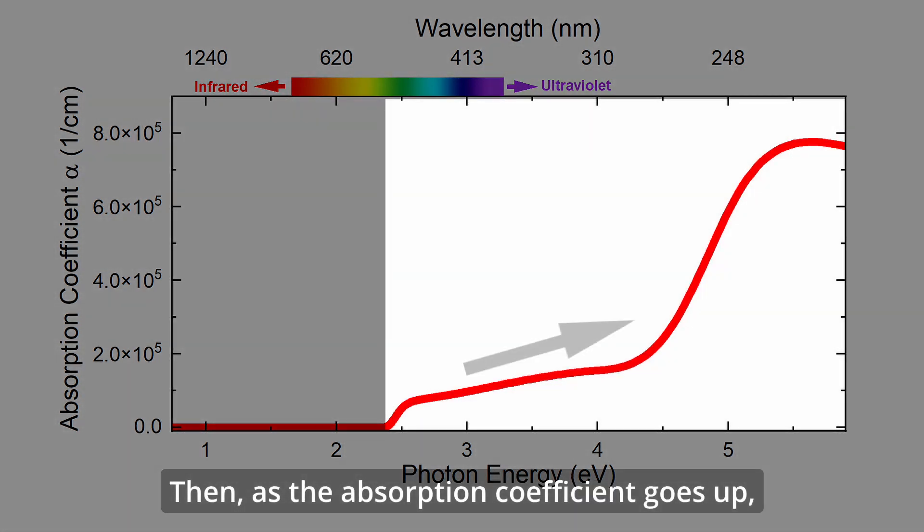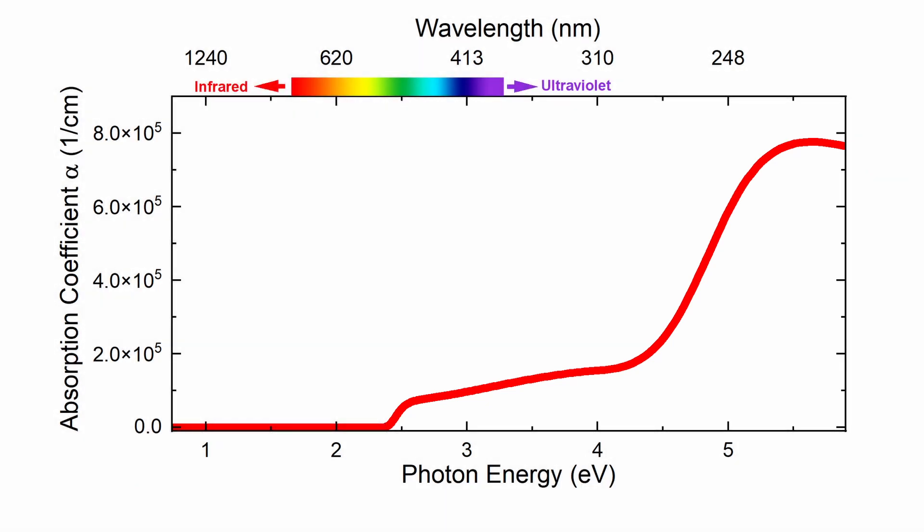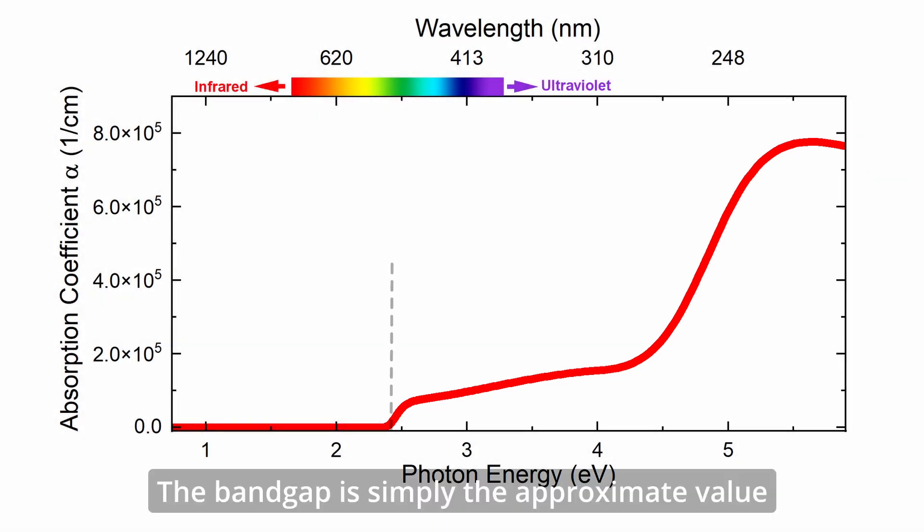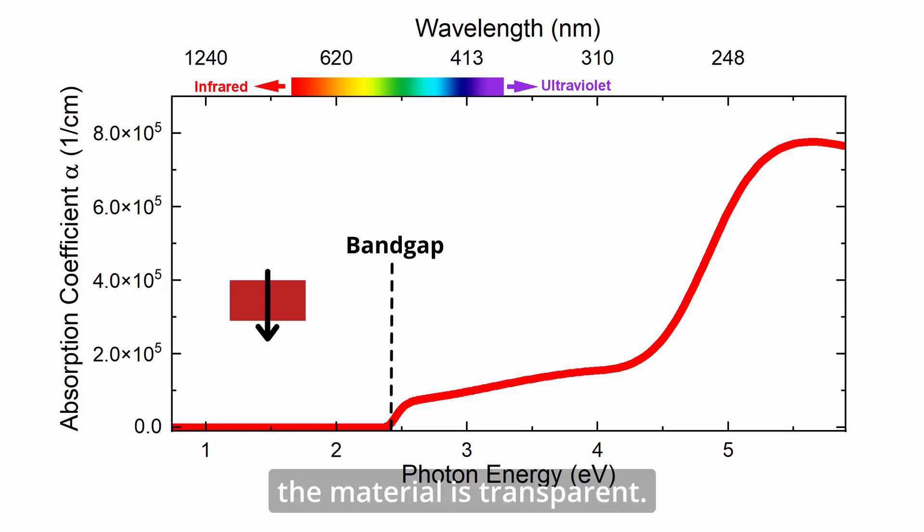Then as the absorption coefficient goes up, it absorbs light more and more strongly. The band gap is simply the approximate value at which this goes to zero. In other words, it's a sort of dividing line. For light with longer wavelengths, the material is transparent, and for light with shorter wavelengths, it absorbs.